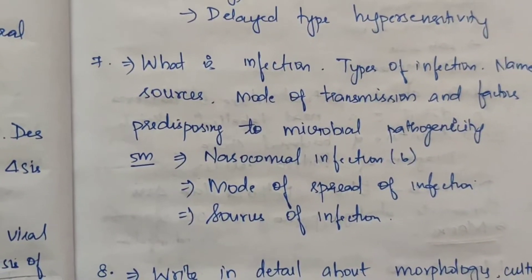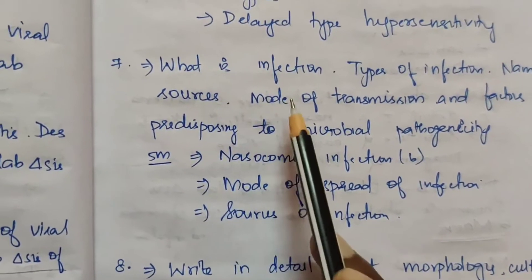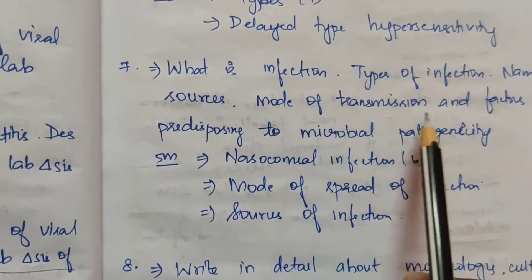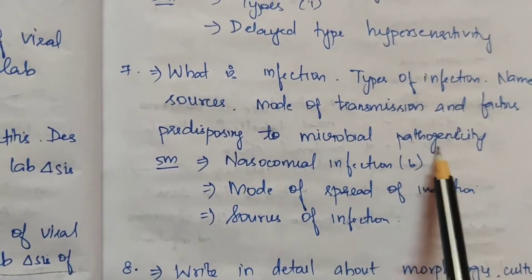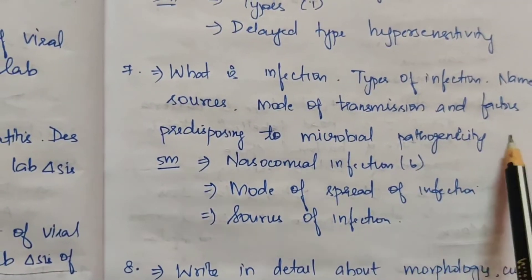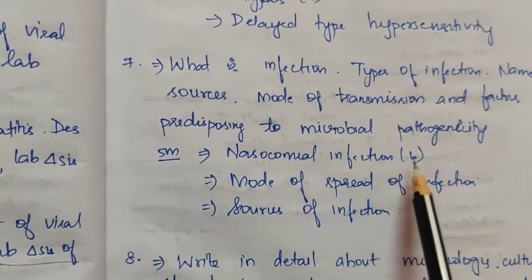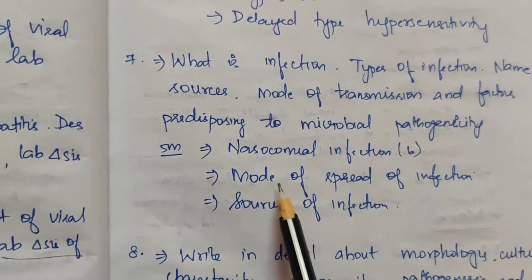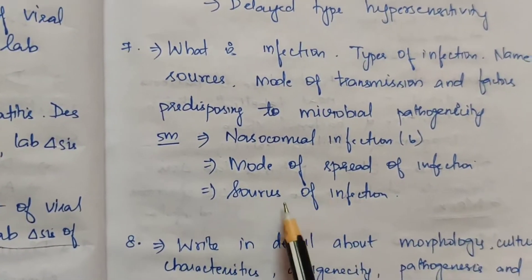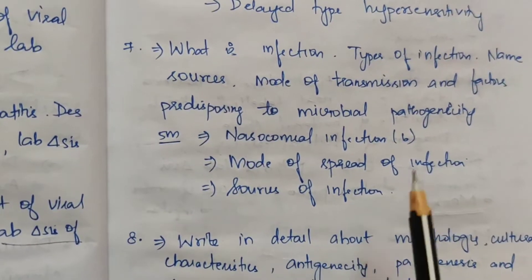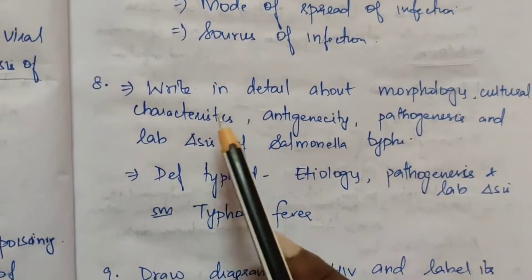For 5 marks, type 1 hypersensitivity has appeared multiple times. The seventh topic: what is infection? Types of infection, name the sources, mode of transmission, and factors predisposing to microbial pathogenesis. For 5 marks, nosocomial infection has appeared 6 times. Mode of spread of infection and sources of infection are also covered.